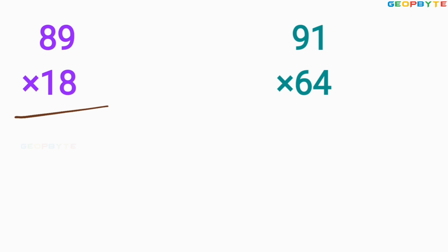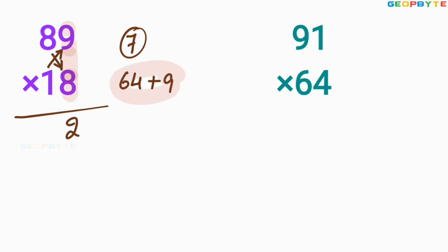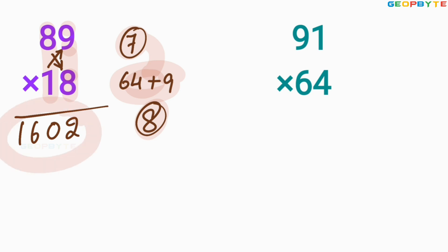Look at the other number: 89 multiplied by 18. First, multiply 9 and 8: equals 72. Write 2 here, 7 balance. Then cross multiplication: 8 into 8 is 64, plus 1 multiplied by 9 is 9 — equals 73, plus 7 balance is 80. Write 0 here, 8 is balance. Then 8 multiplied by 1 is 8, plus balance 8 is 16. So 1,602 is the value of 89 multiplied by 18.